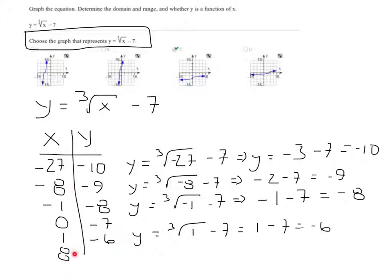So plugging in an 8, get the cubic root of 8 minus 7. That's just a minus 7 there. 2 minus 7 is negative 5.